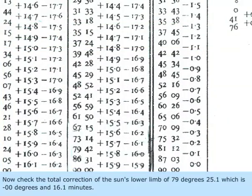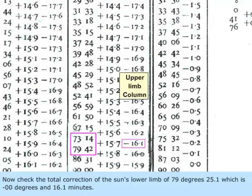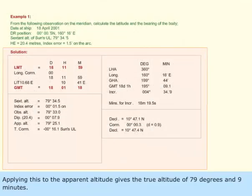Now, get the total correction for sun's lower limb for 79 degrees and 25.1, which is minus 00 degrees and 16.1 minutes. Applying this to the apparent altitude gives the true altitude of 79 degrees and 9 minutes.